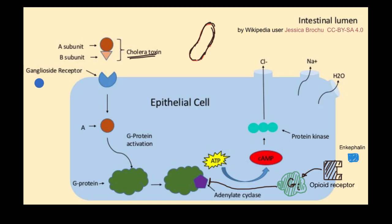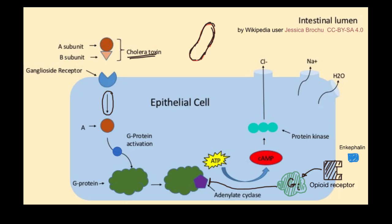The cholera toxin interacts with the ganglioside receptor on the epithelial cell. When you see arrows on these transduction pathways, you can view them as activating or promoting the next step, or making it more likely to happen. Once the toxin has interacted with the receptor, the A subunit goes in and interacts with a G protein.